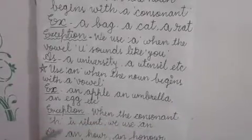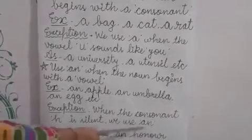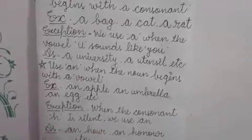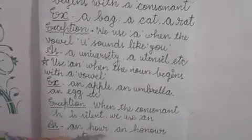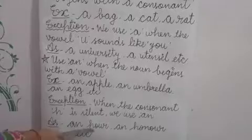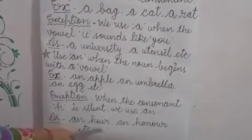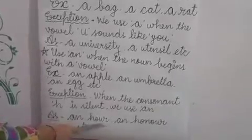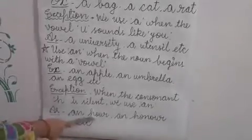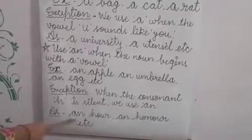Exception: When the consonant 'h' is silent, we use 'an'. Example: an hour. Here 'h' is a consonant, but we read this word as 'our'. 'H' is silent here, that's why we use 'an'.